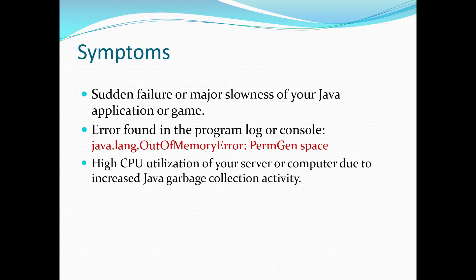A typical symptom is a sudden failure or major slowness of your Java application or game. And of course, the error found will be the OutOfMemory PermGen Space — a very typical error. Another very common symptom is high CPU utilization. This is because the PermGen Space is a separate memory space and it's only getting collected during a major collection. So when the PermGen is getting depleted, the garbage collector will try to collect it over and over to try to free up space, using threads and therefore utilizing your CPU. That's why CPU will spike up when you're getting very close to the out-of-memory error.